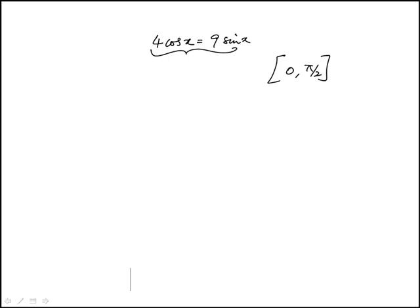The key thing to notice is that a tangent is kind of hidden here. If I move the 9 here, cosine x over there, I have sine x over cosine x is 4 ninths, which is tangent x.